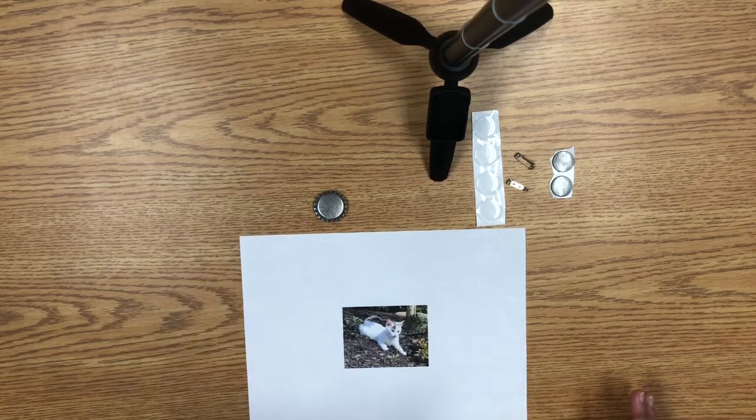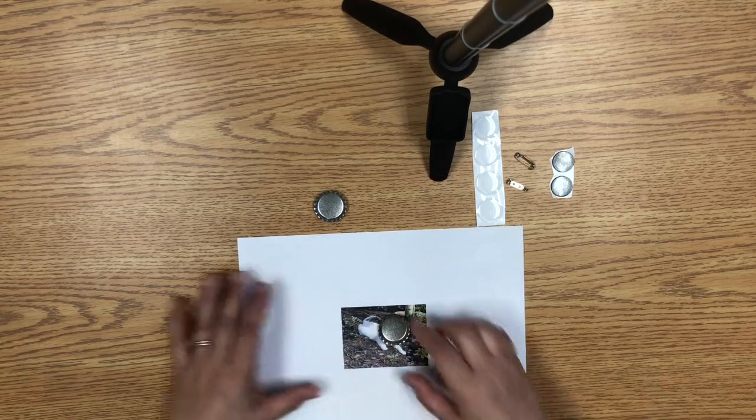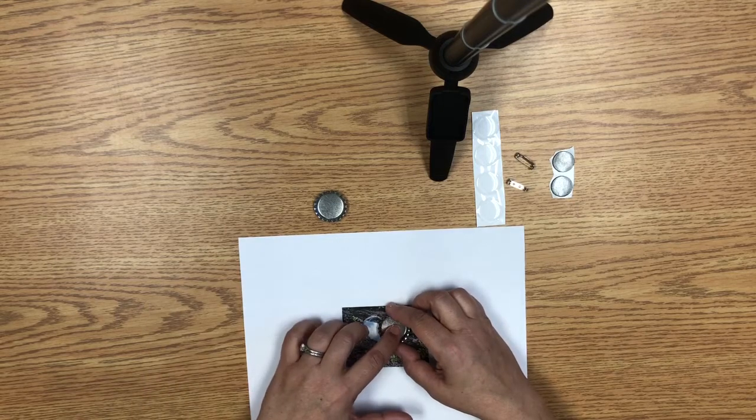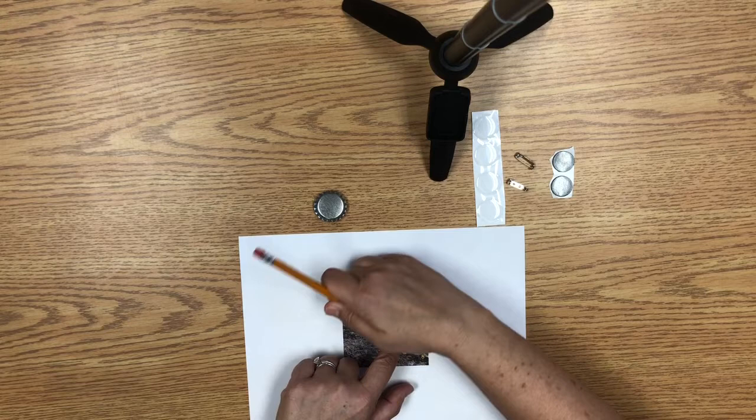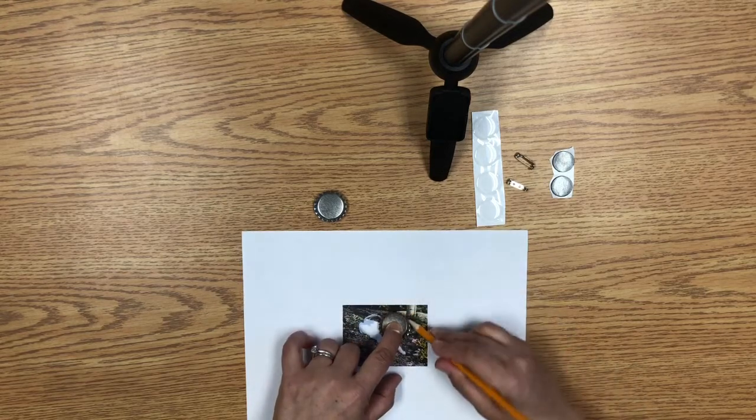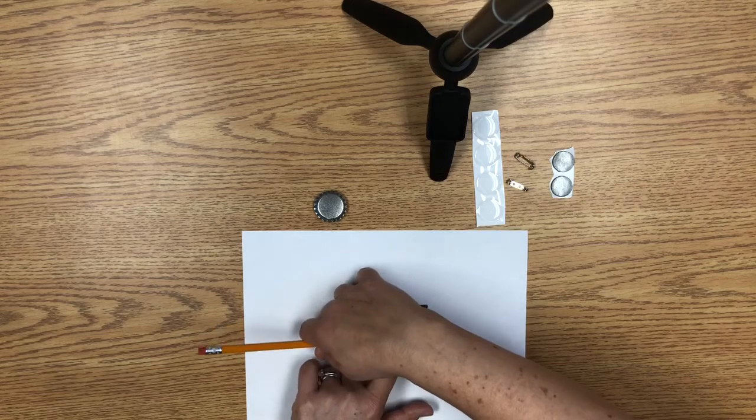So first you want to take your bottle cap and just use it to trace the area that you want to go inside. I just want the kitten's head and then take a pencil and lightly trace the circle so that you get the right size.